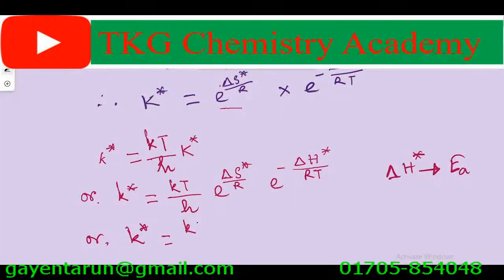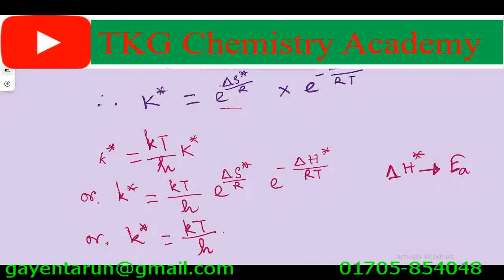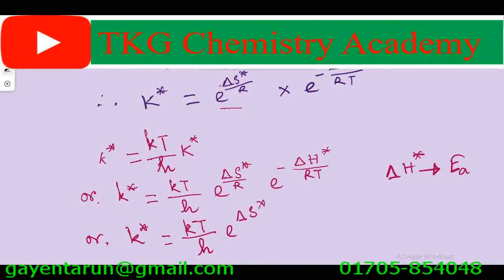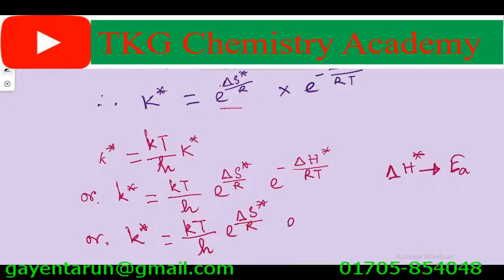Small k T divided by h, into e to the power del S star divided by R, into e to the power minus Ea divided by RT.